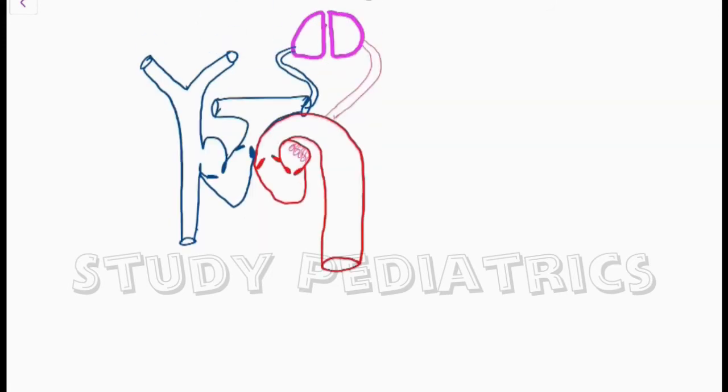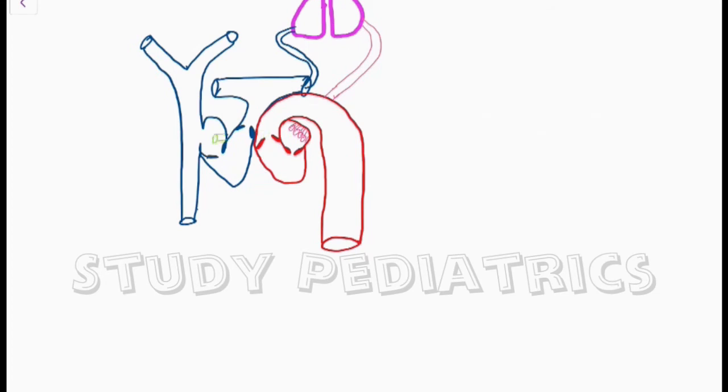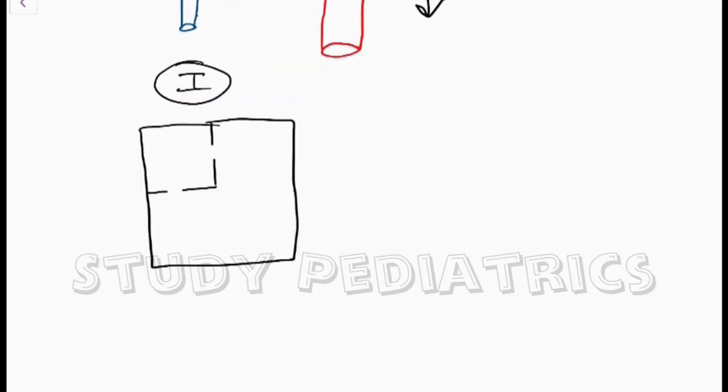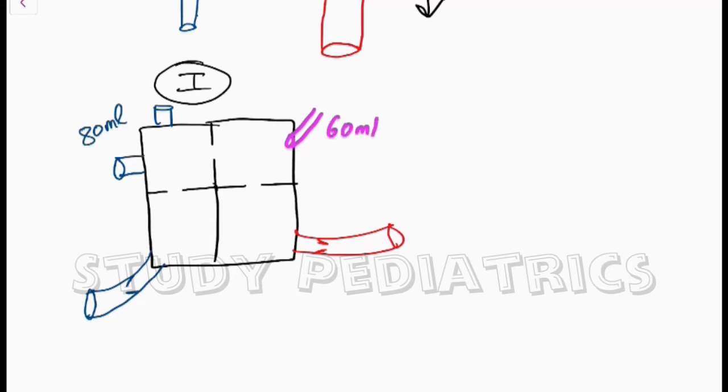Now I will show you a schematic diagram of the same. Here we see a four-chambered heart. Let's suppose that the right chamber receives a blood supply of 80 ml per beat, and similarly the left heart receives a blood supply of 60 ml per beat. Here we should consider that this occurs during inspiration. The right chamber receives more blood and the left less.